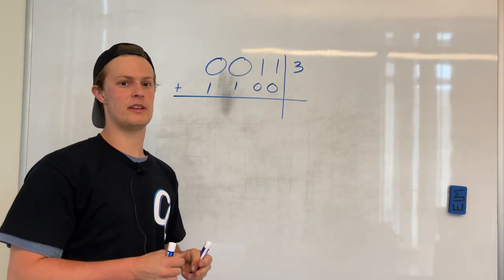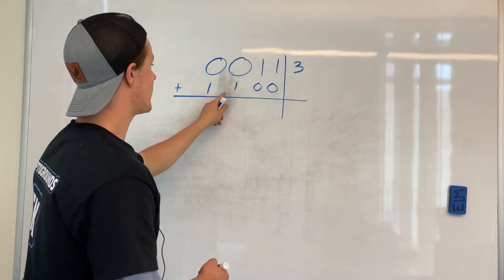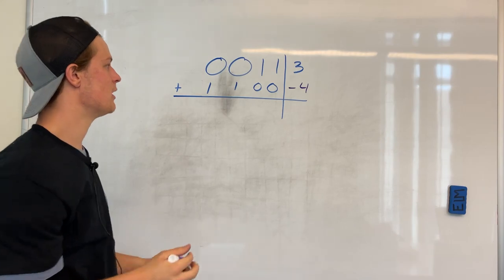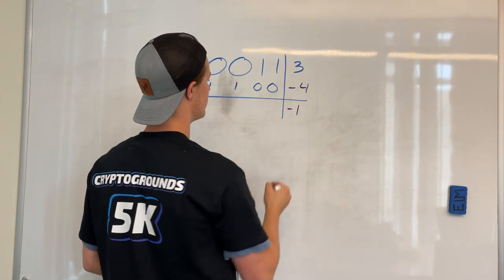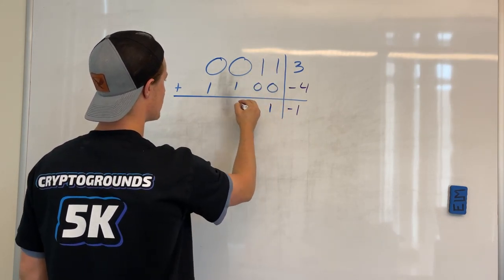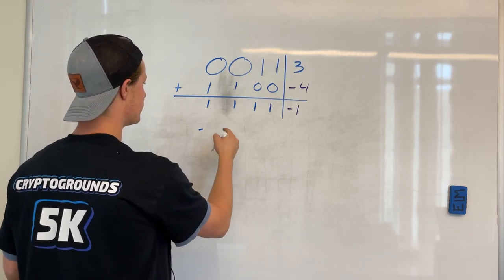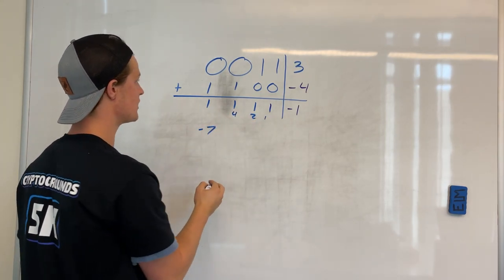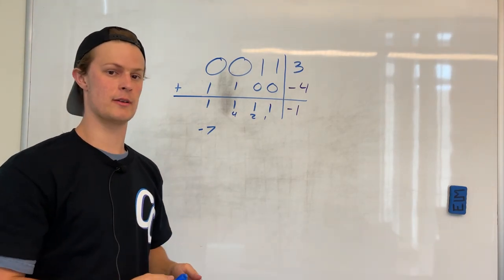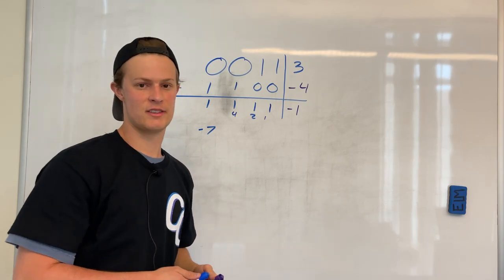Earlier I mentioned treating binary numbers in two different ways. If we treat the fourth bit as a sign bit and consider it a negative value — making it negative 4 — and we try to add 3 to it expecting negative 1, we run into a problem. The result 1111 in this signed interpretation is actually negative 7, not negative 1. This shows there's a fundamental issue with simple signed representation that we need to address. We'll cover the solution — converting the binary number into something else — in episodes 2 and 3.